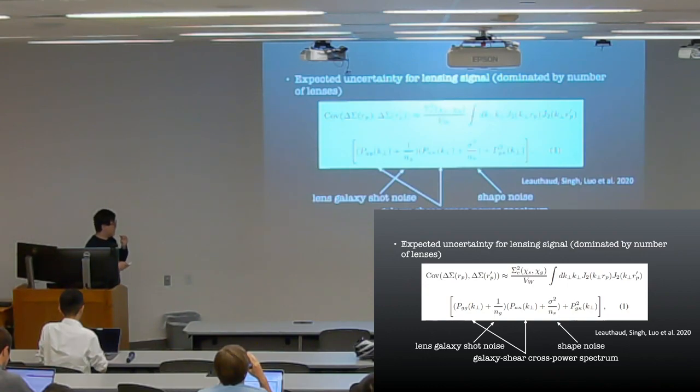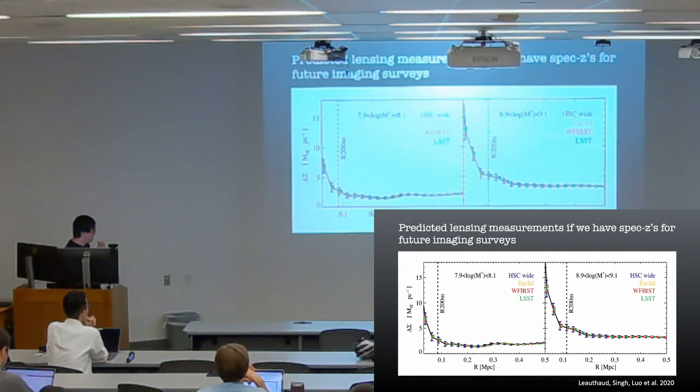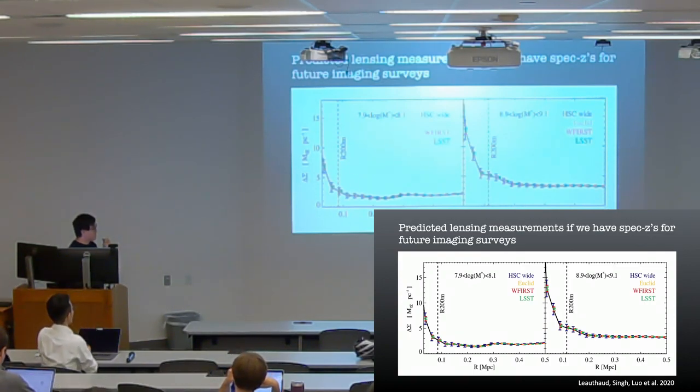We did theoretical predictions on how well we can constrain if we know the redshifts of those dwarf lenses. The lensing signal-to-noise is dominated by the number of lenses, which is sort of expected. You have more lenses to stack, you have better signal. For different surveys, we can constrain - the error bars show model predicted lensing measurement for different surveys. If we can detect all the dwarf galaxies in those surveys below redshift 0.2, how well we can measure the lensing halo profile turns out to be really good. The error bars are really small for lensing.